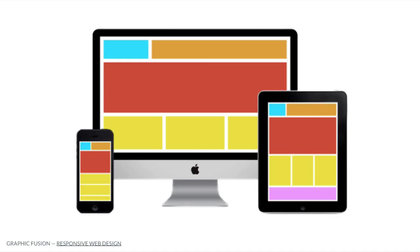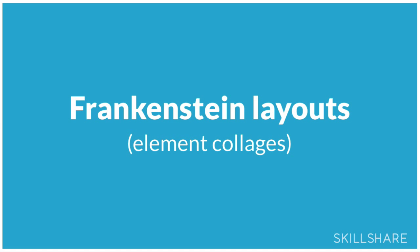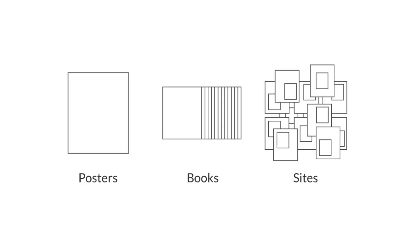We started thinking more about grids and reflowing layouts and how they would be appropriate for each device. But then we also had to deal with the multiplicity of new hardware and new devices every month. So design process has changed as a result of this. I've moved to what I call Frankenstein layouts, which are combinations of all the main pieces on the page. Other people have talked about element collages, which are a similar idea.